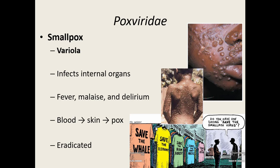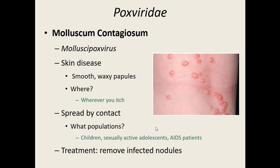The other pox virus that affects humans is molluscum contagiosum. The disease is molluscum contagiosum and the virus itself is called the molluscum pox virus. It causes a skin disease producing smooth waxy papules — almost shiny, with a pink, waxy appearance. Those smooth waxy papules show up anywhere you itch, because touching one papule to another is how it's spread. You pick it up by skin-to-skin contact, and then by itching, it spreads.